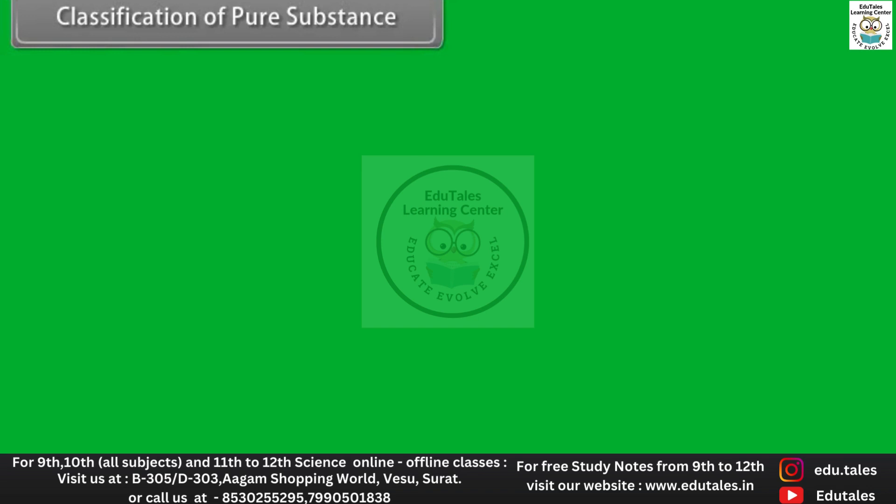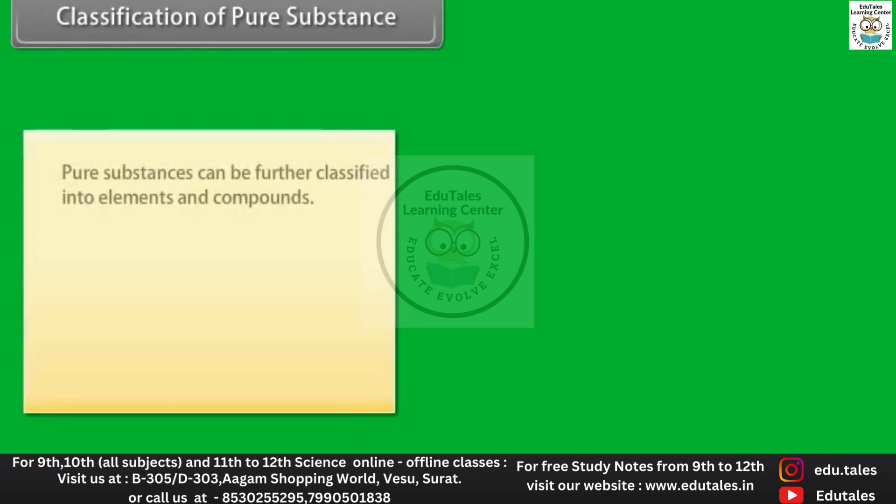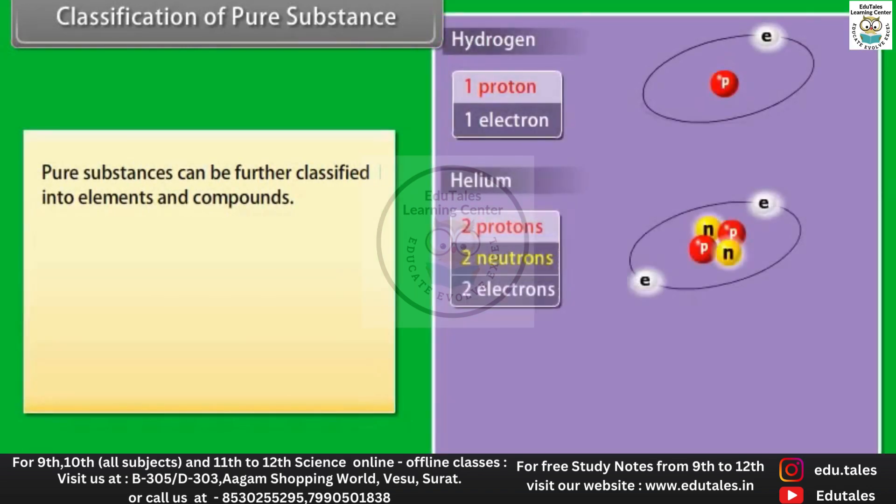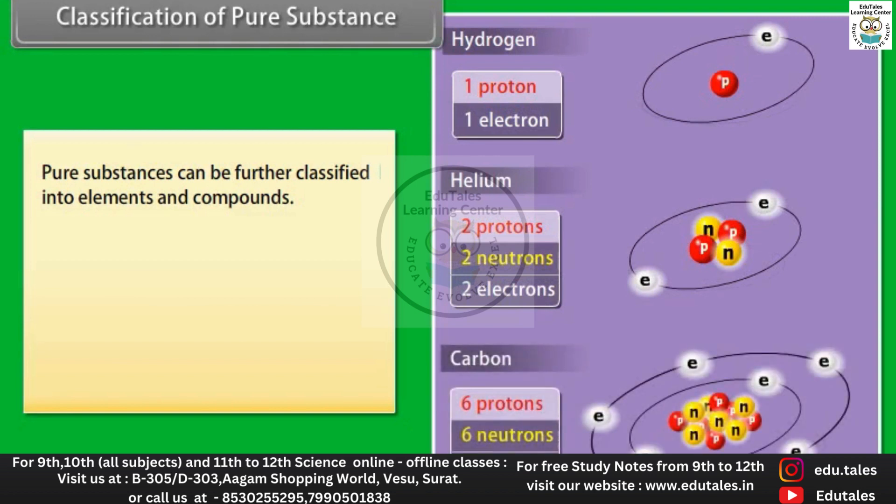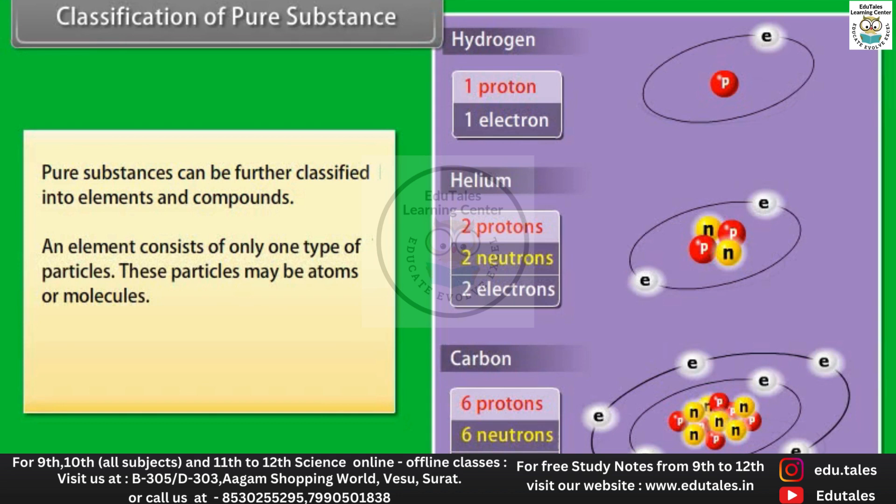Pure substances can be further classified into elements and compounds. An element consists of only one type of particles. These particles may be atoms or molecules. Example: hydrogen, helium, carbon, sodium, copper, silver, oxygen.